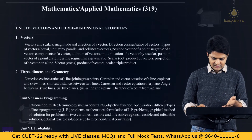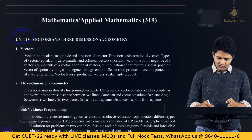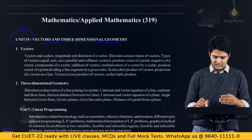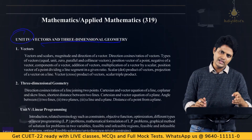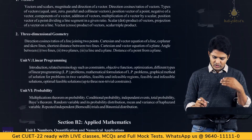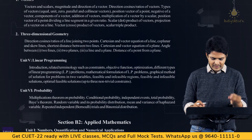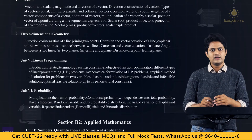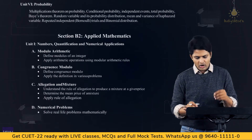Continuing in mathematics, Unit 4 covers vectors and 3-dimensional geometry — vector addition, multiplication, and angles between vectors — and Unit 5 is linear programming. Under probability, you have conditional probability and various probability problems.